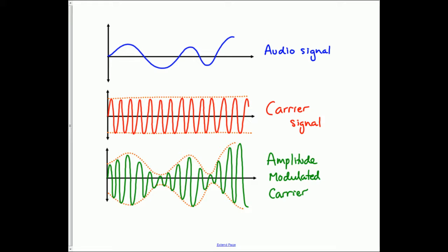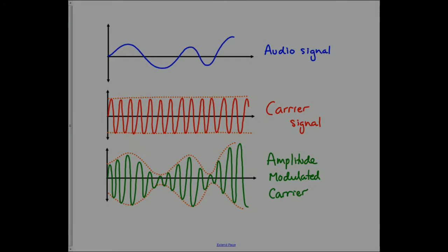Let's see how well we did — counting the peaks: 1, 2, 3, 4, 5, 6, 7, 8, 9, 10, 11, 12, 13, 14. Perfect — not quite in phase at the end, but pretty good. That's how to draw an amplitude modulated carrier.